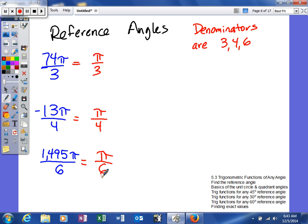However, if it's not 3, 4, 6 in your denominator, then you have to go back and use the rules that I showed you earlier for reference angles for radians.